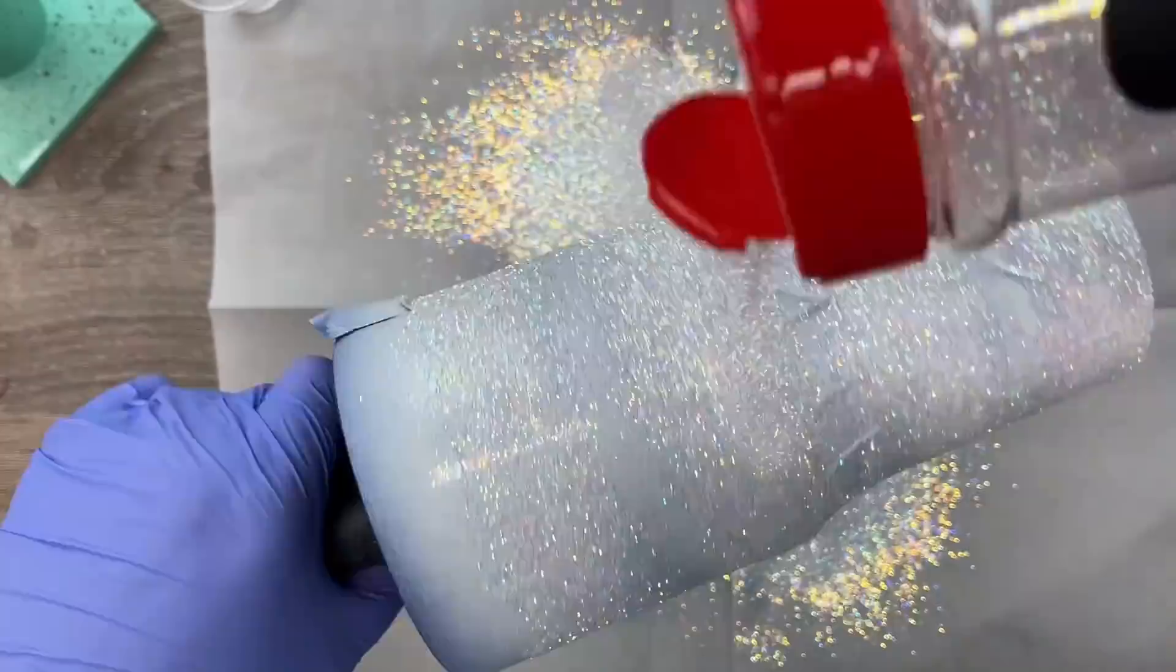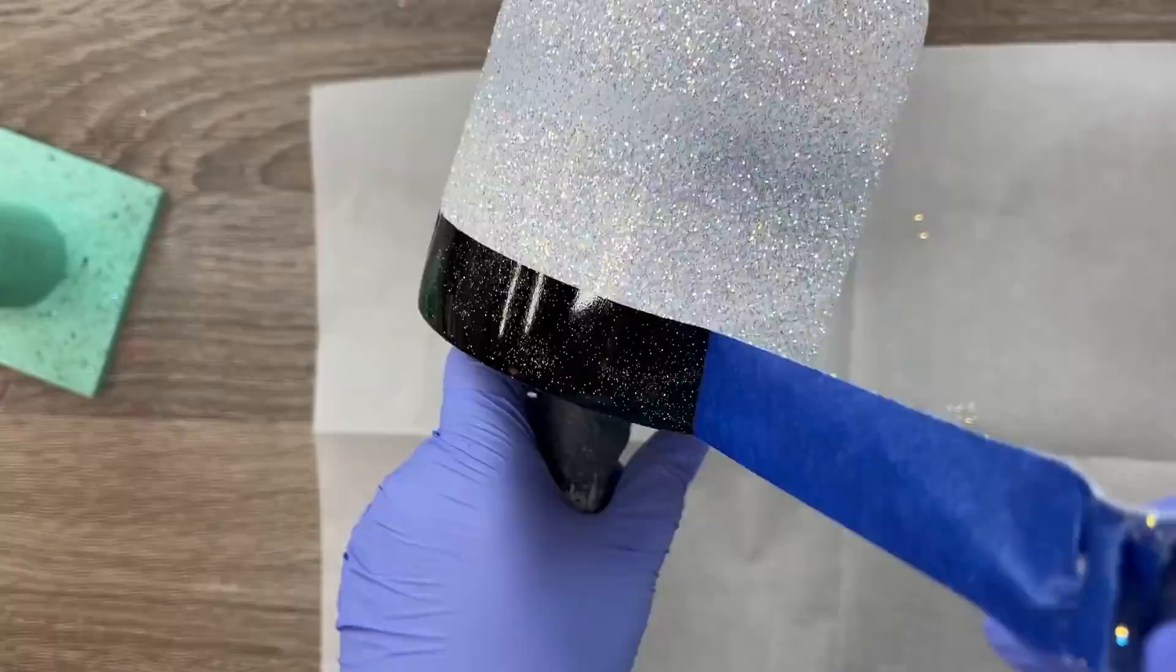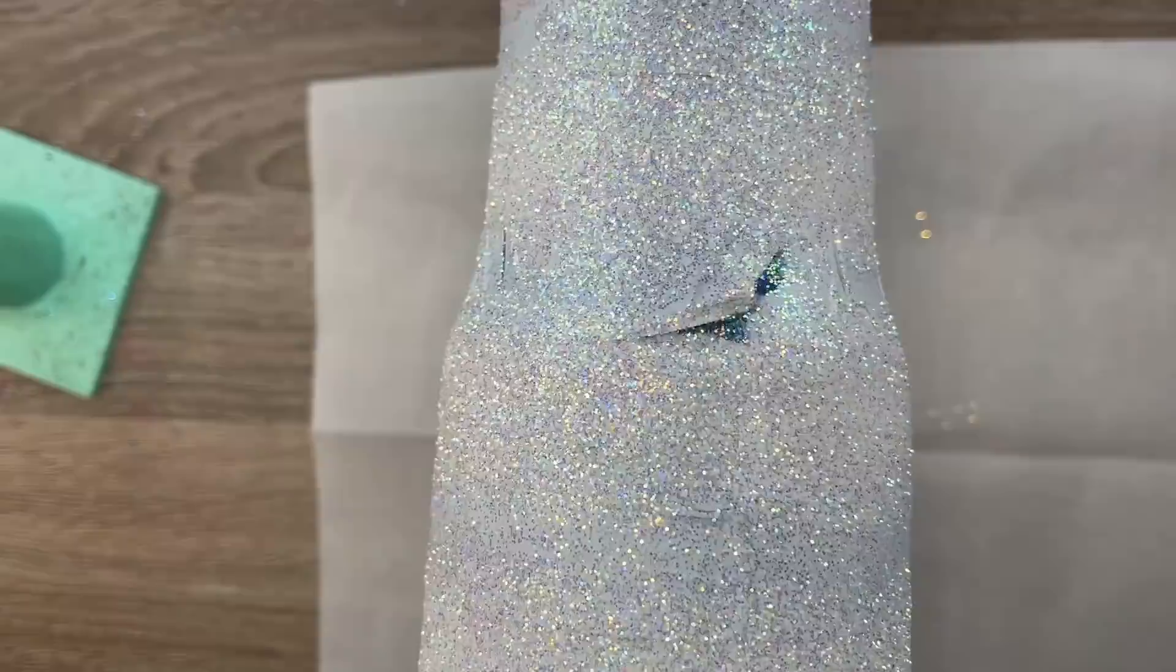I'm going to let it rip with some Nookie glitter from Peachy Olive Glitters. This is a beautiful white glitter. I'm going to tap off the excess after I'm sure that I've got great coverage everywhere. Then we're going to go ahead and remove those tape lines while our epoxy is still wet.